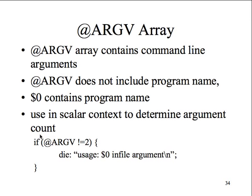Argument values: the array @ARGV contains command line arguments. You type in the name of your Perl program and the command line arguments come in the same way as in C's main function. $ARGV[0] contains the first argument - program name is not included. Use scalar context to determine the number of arguments. If @ARGV is not equal to two, print a message saying you need to put in both the input and output file names.